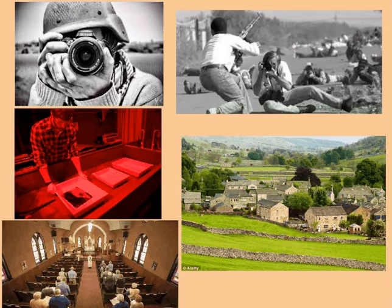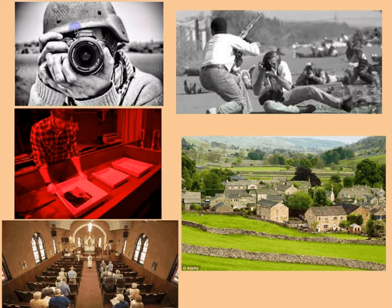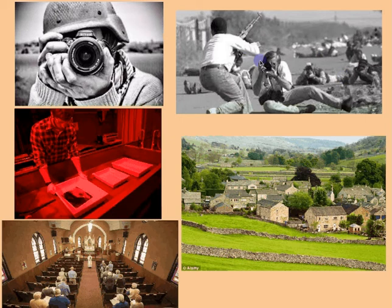Before we have a look at the poem, let's have a look at some pictures. The first picture is a photographer wearing a helmet — he's wearing it to protect his head because he is taking photos in a war. So he's not a normal photographer, he's a war photographer. In this picture you can see some people lying on the ground — maybe dead bodies or people who have been injured in the war.